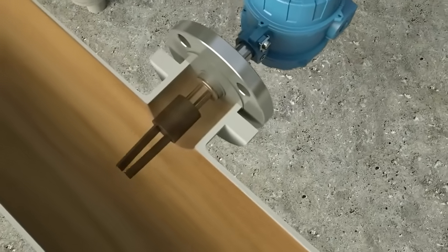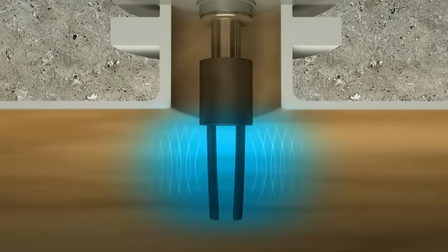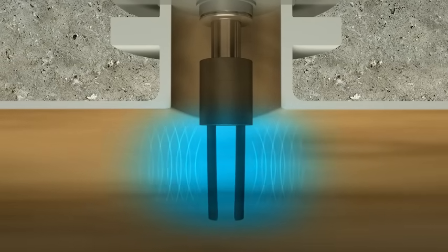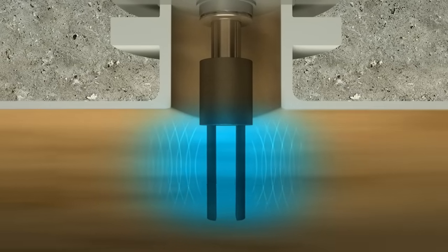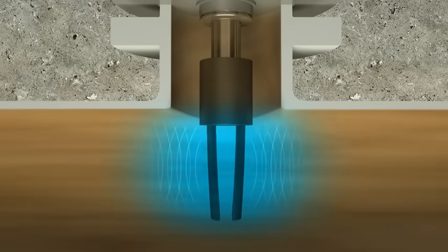Let's look at the mechanics of how these measurements are achieved. Similar to a tuning fork, the fork density meter vibrates at the natural frequency of the system. The natural frequency changes as the density of the surrounding fluid changes.